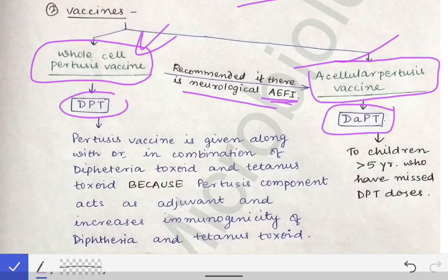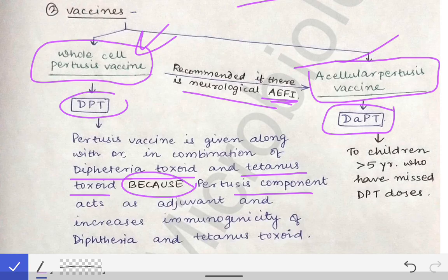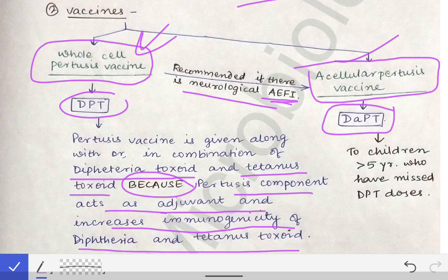In DPT, the pertussis vaccine is given in combination with diphtheria toxoid and tetanus toxoid. This is because the pertussis component acts as an adjuvant and increases the immunogenicity of the diphtheria and tetanus toxoids — not the other way around. The pertussis component boosts immunogenicity of diphtheria and tetanus, not the reverse.